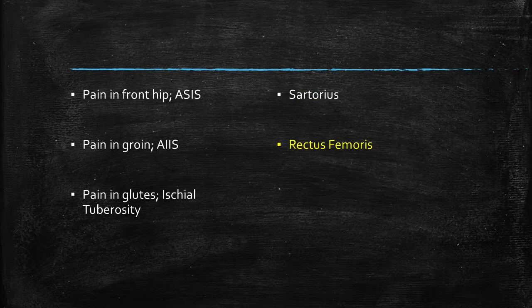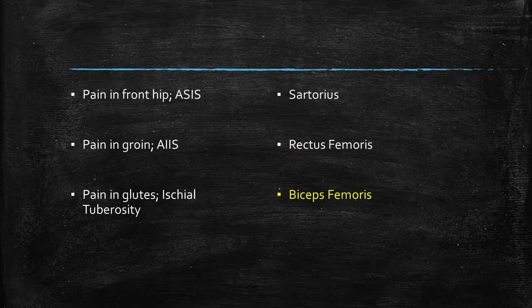Now if the pain is in your back side, meaning pain in the glutes, then an avulsion fracture of the ischial tuberosity means you should be thinking the culprit is the biceps femoris. Easy enough.